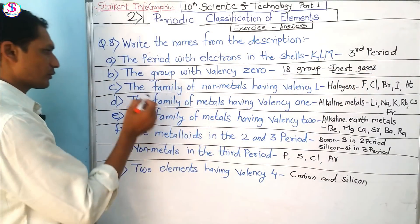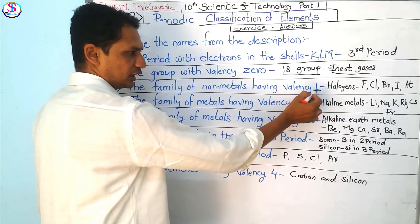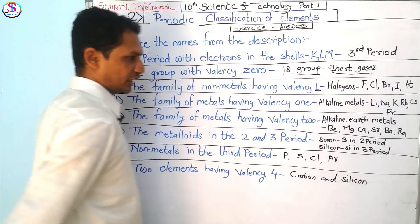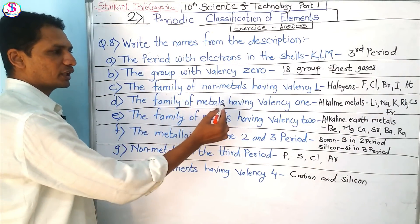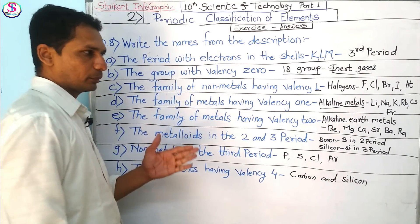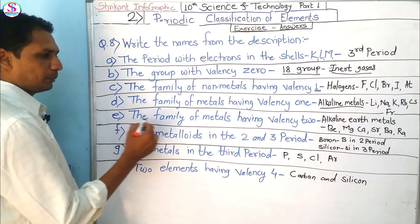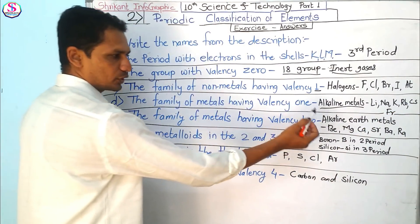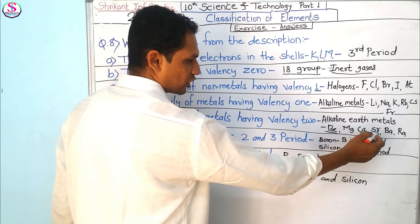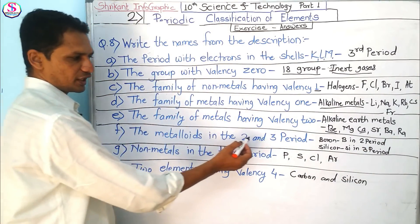The family of non-metals having valence 1 is called halogens — fluorine, chlorine, bromine, and iodine. The family of metals having valence 1 is called alkali metals — lithium, sodium, potassium, rubidium, cesium, and francium. The family of metals having valence 2 is called alkaline earth metals — beryllium, magnesium, calcium, strontium, barium, and radium.